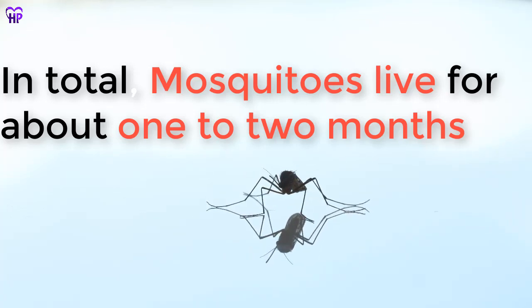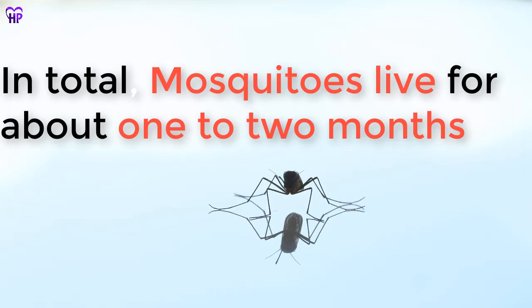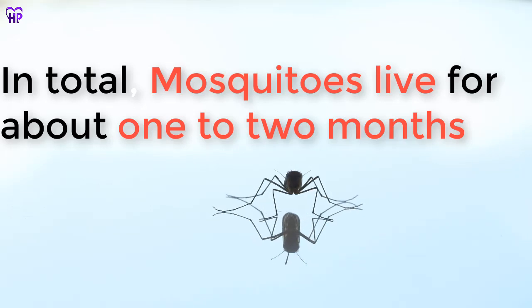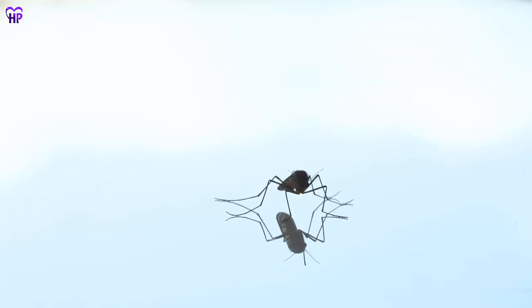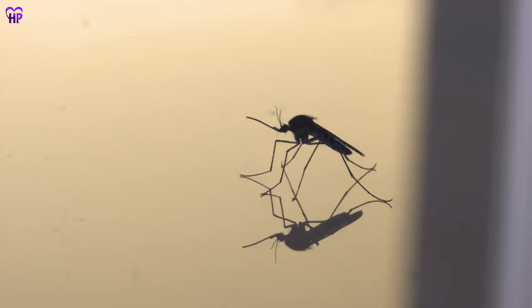In total, mosquitoes live for about one to two months. However, by the time the adults are dying off, their young are already developing, meaning more females will be out in search of a blood meal soon.